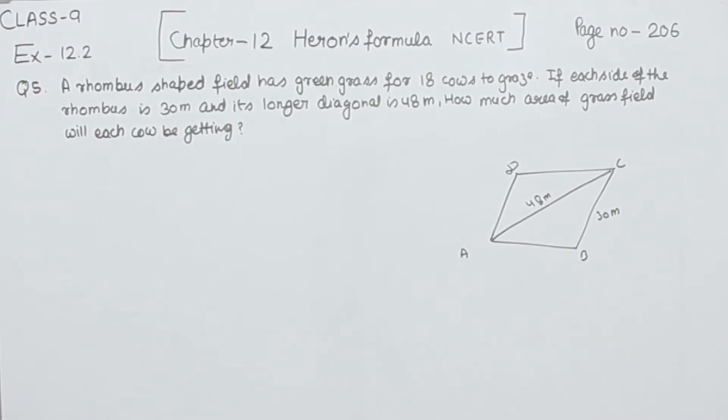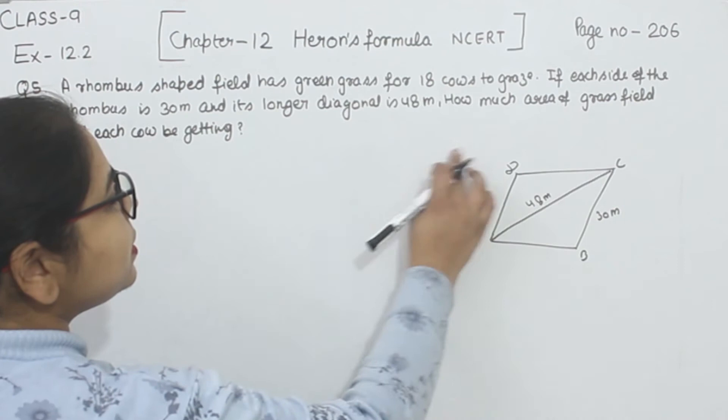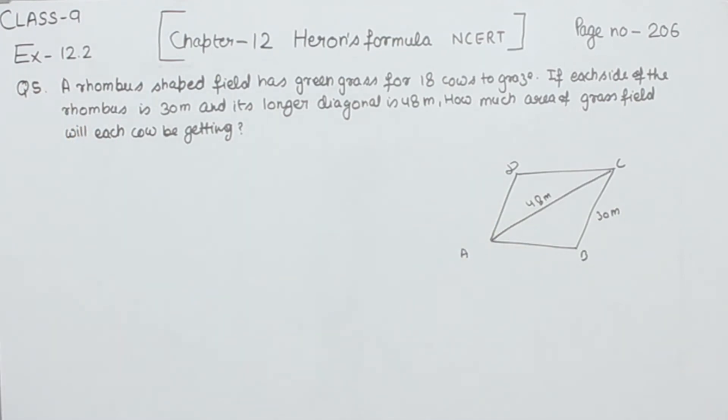First of all, we are going to find the area of the triangle. This diagonal divides this one in two equal parts.